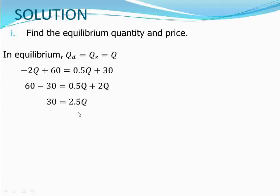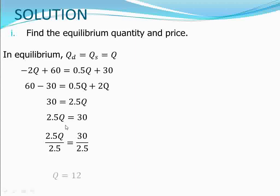We can rearrange to write 2.5Q = 30, then divide both sides by 2.5. This gives Q = 30 ÷ 2.5 = 12. Therefore our equilibrium quantity is 12 units.